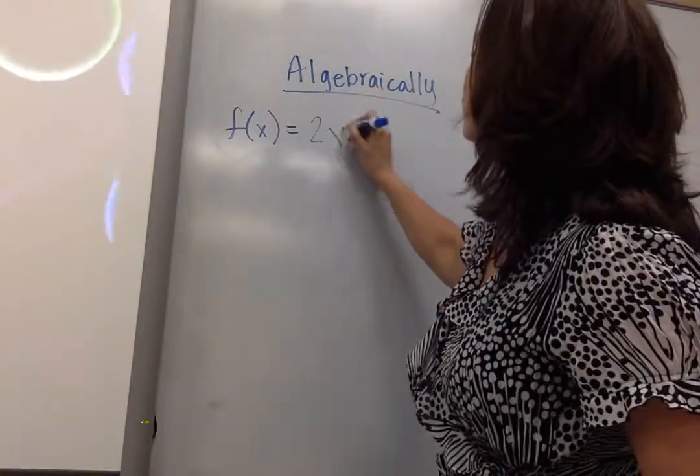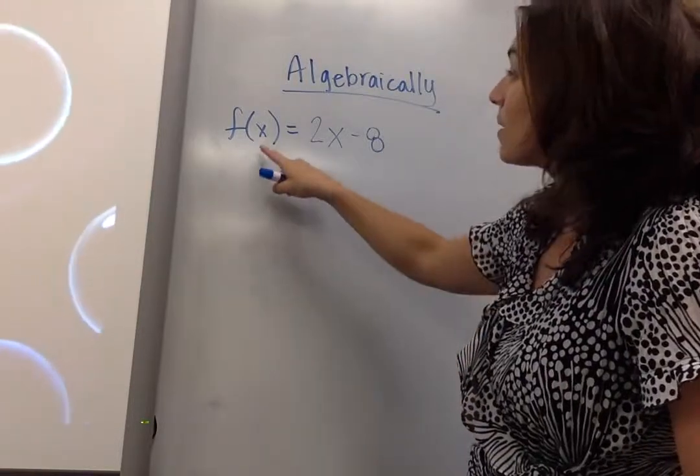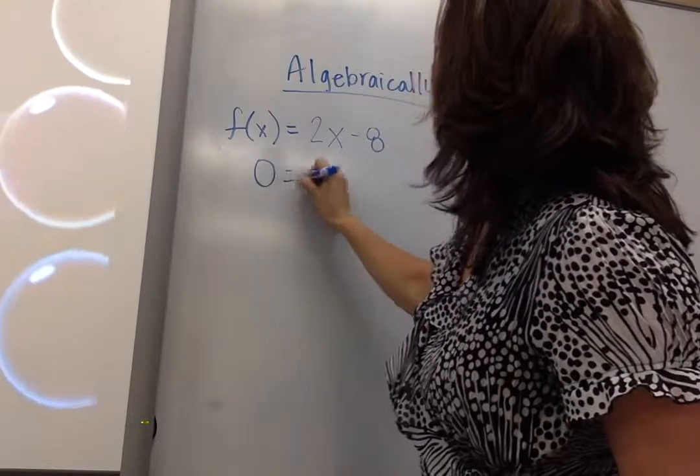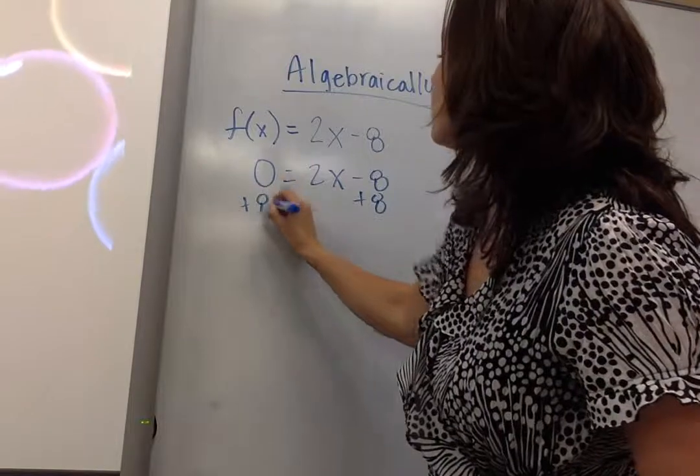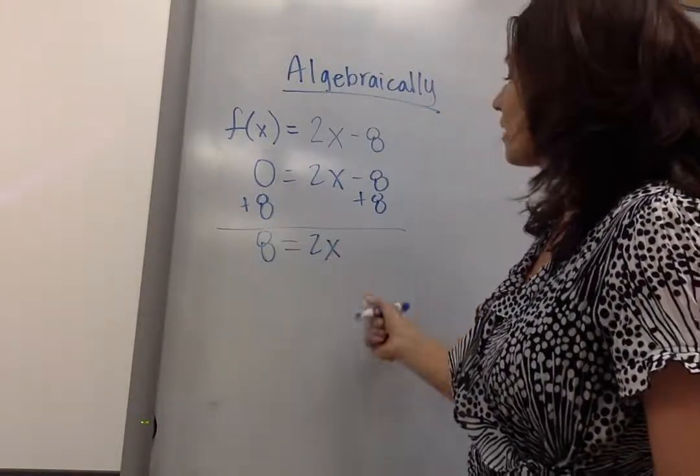Let's say I have 2x minus 8. Same logic. I know that my y is going to be 0, so I plug in 0 for y, and I solve for x, so I add 8 to both sides, additive inverse.